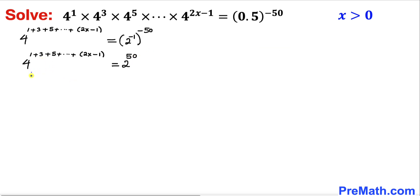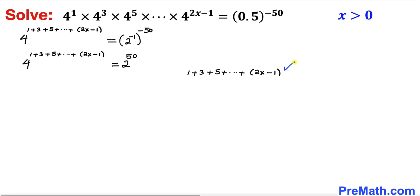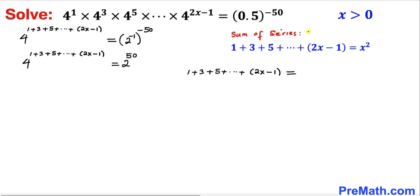The left hand side remains the same. Now let's focus on the exponent — this whole expression 1 plus 3 plus 5 plus ... plus 2x minus 1. Recalling the arithmetic series for the sum of odd numbers, that sum equals x squared. So we are going to have x squared as our exponent.